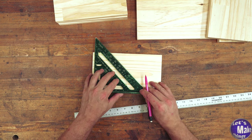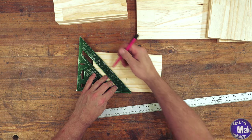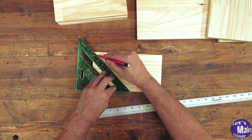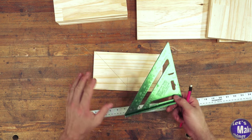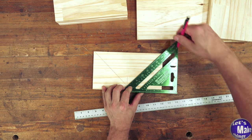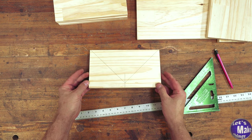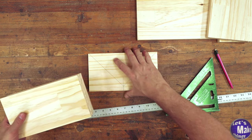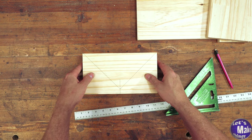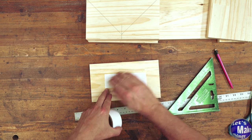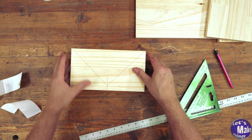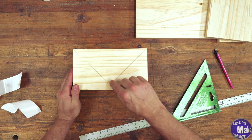Now I'm going to grab my speed square again and slide this over so that my 45-degree angle is this way. I'm going to find the number 5 and draw a line. I'll flip this over and do the same thing on the other side. Now we'll take the three other pieces and stack them using some double-sided tape.